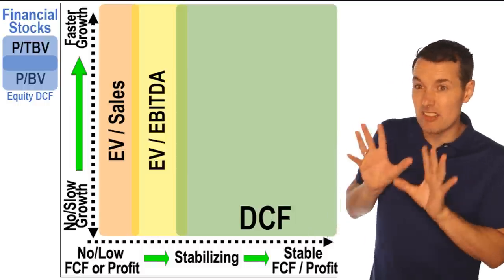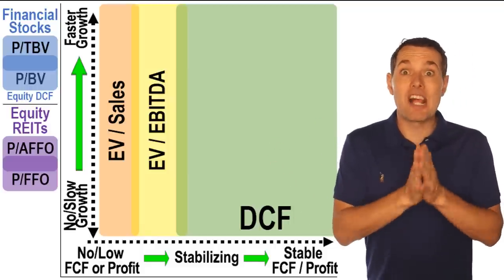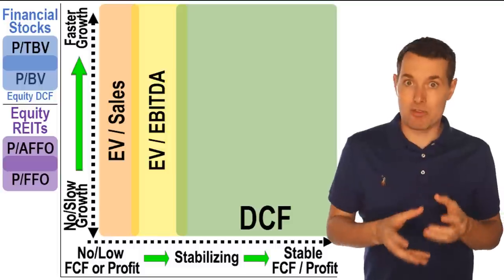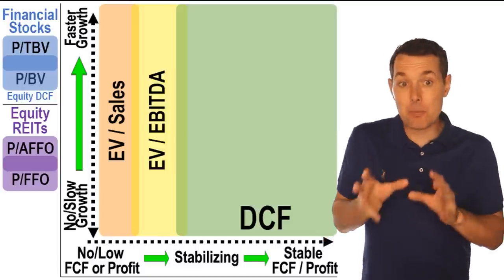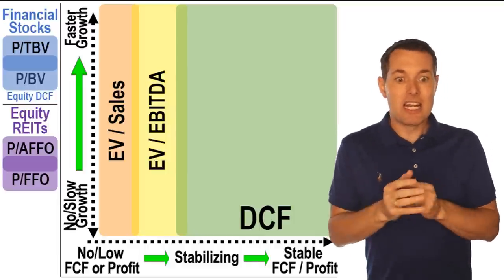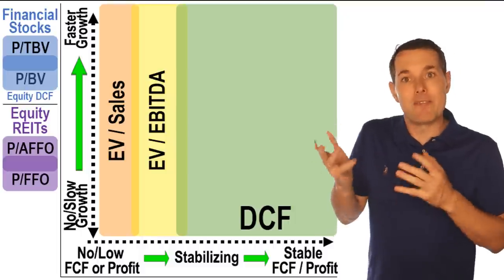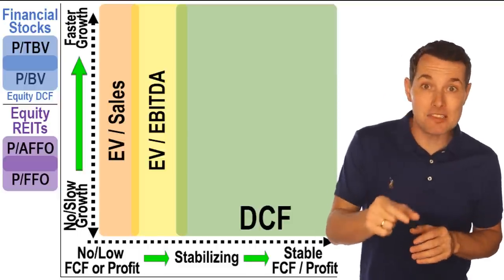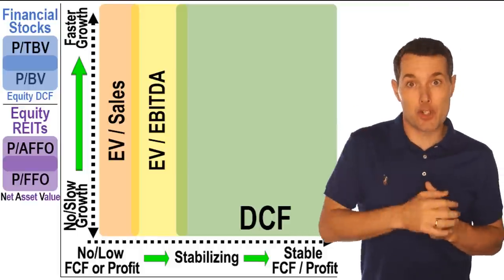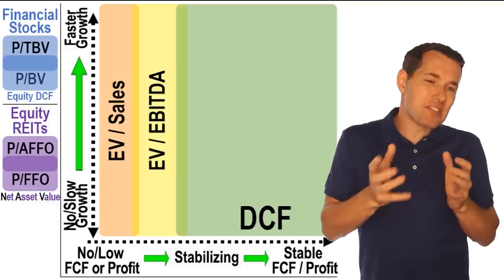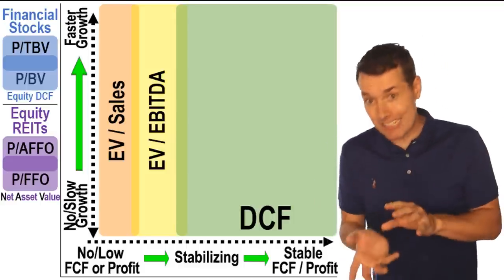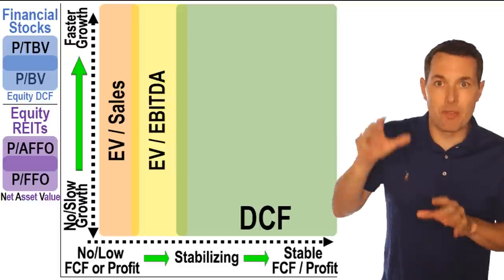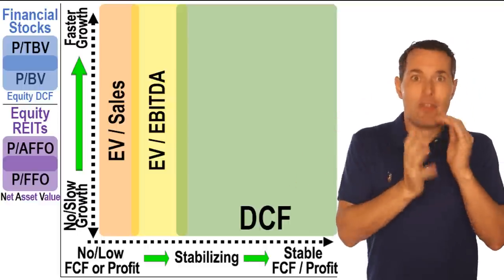Another outlier that doesn't fall into the typical scale is equity REITs. REIT is short for real estate investment trust — an equity REIT is a real estate company that invests in actual real estate properties. The advantage is they tend to pay big dividends, and the company gets tax advantages if they pay out most of their profits as dividends. A specialty way to come up with a fair value for REITs is the net asset value, or NAV. It's basically the value of all the properties minus what is owed on those properties — and ideally we want to pay less than that.